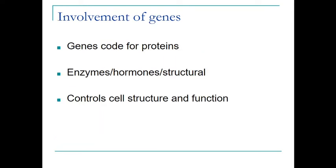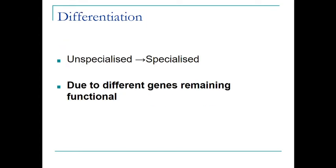Genes code for proteins. Genes are a section of DNA, or a section of bases, that codes for a particular protein. Enzymes and hormones are examples of what can be made from genes. Genes control cell structure and function. Differentiation means that unspecialized cells can actually be transformed into specialized cells.